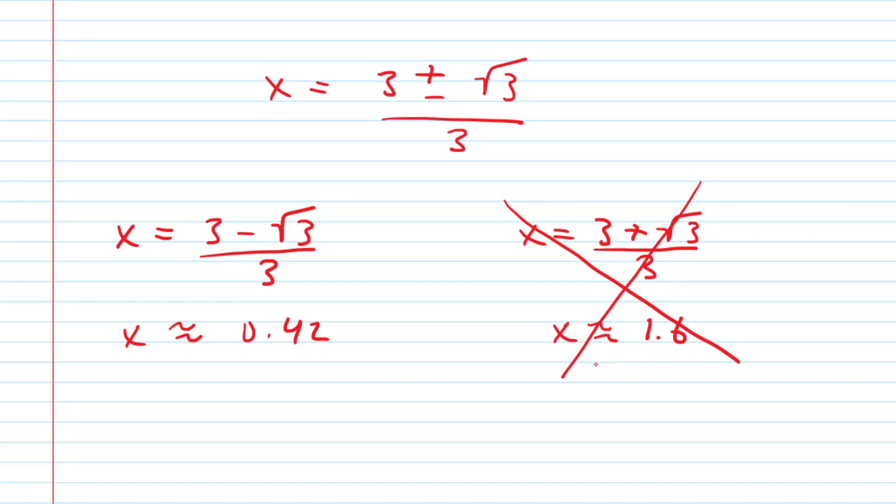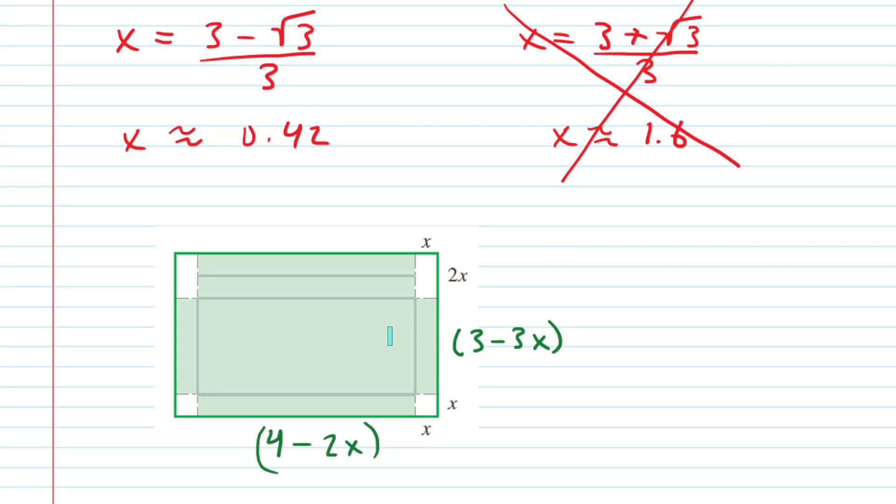Let's try to understand why x cannot be 1.6. So here is a look at the pre-folded cardboard and recall this dimension that we had labeled 3 minus 3x. Well imagine if x was something larger than 1, for example 1.6 which we calculated earlier. So you would have 3 minus 3 times 1.6. But if you plug that in you would get a value that's less than 0. So of course we cannot have a length of our box that is negative.